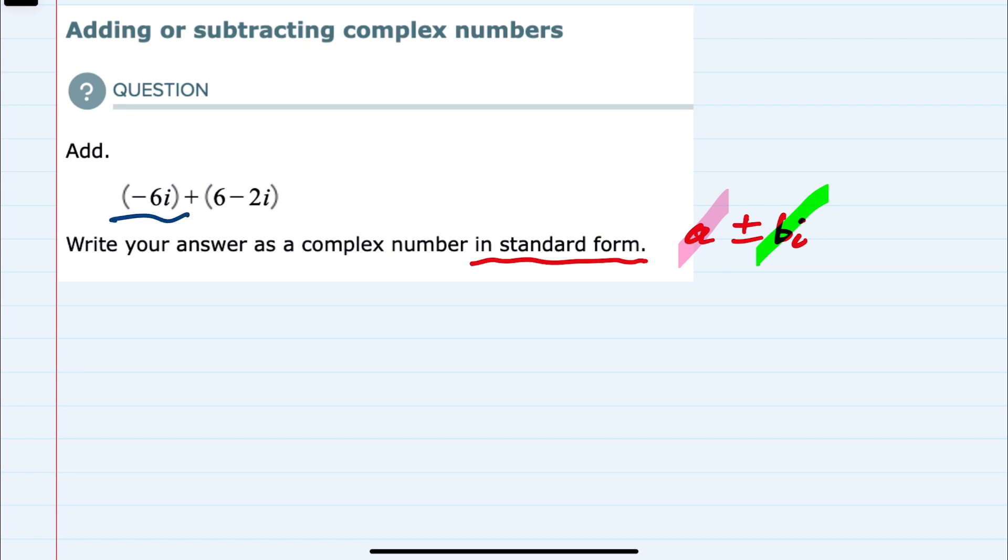The first complex number doesn't have the rational part, so I'll just indicate that as 0 minus 6i. The second number has 6 minus 2i. And you can see here I lined up like terms